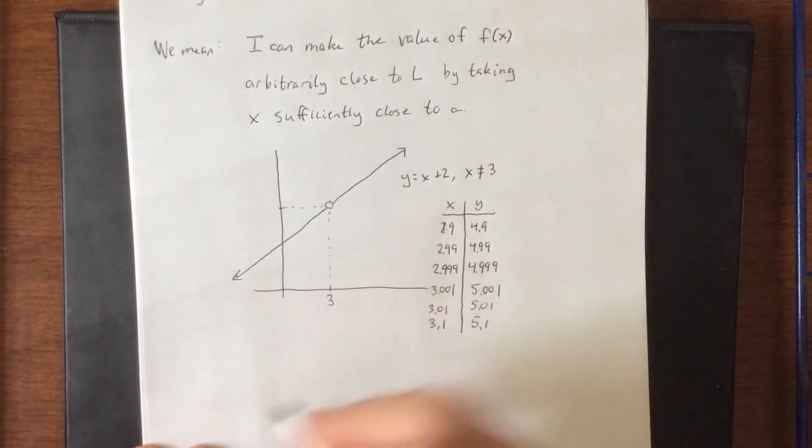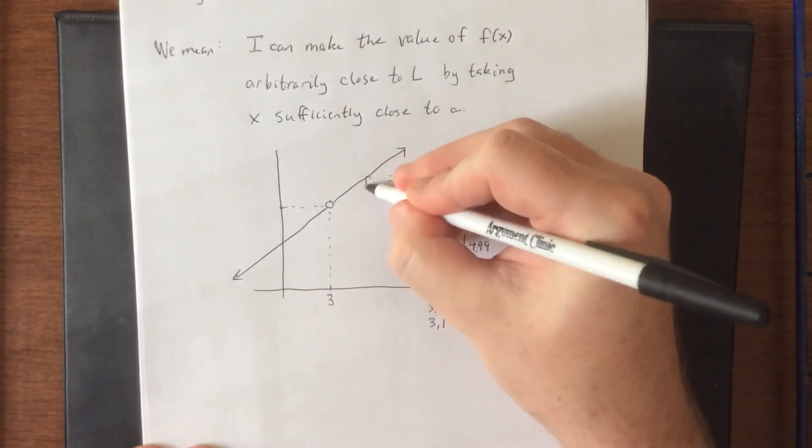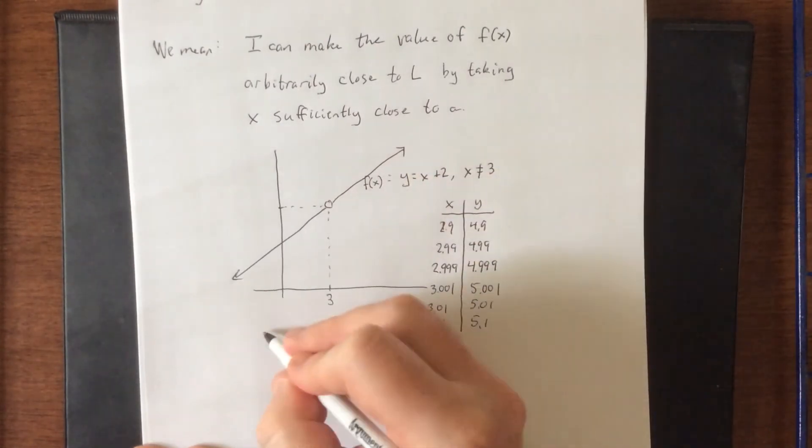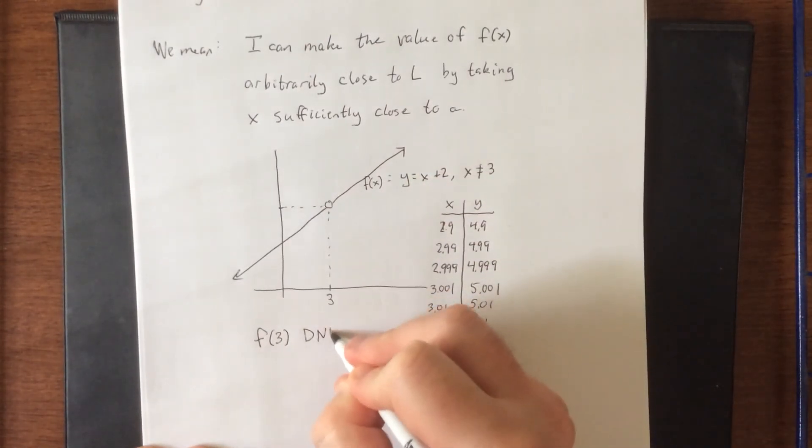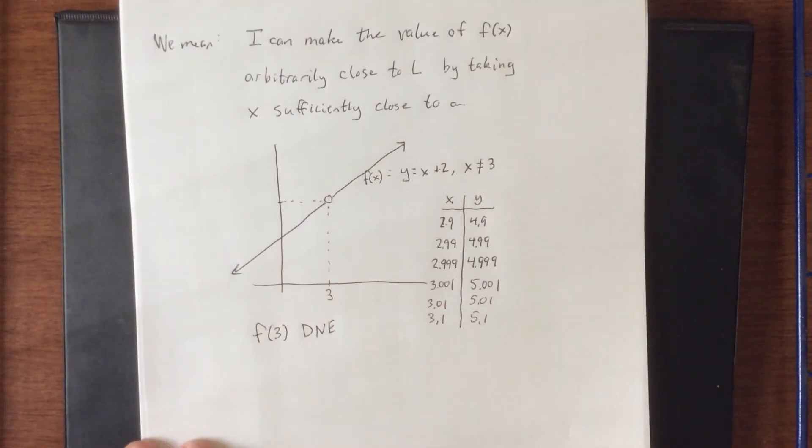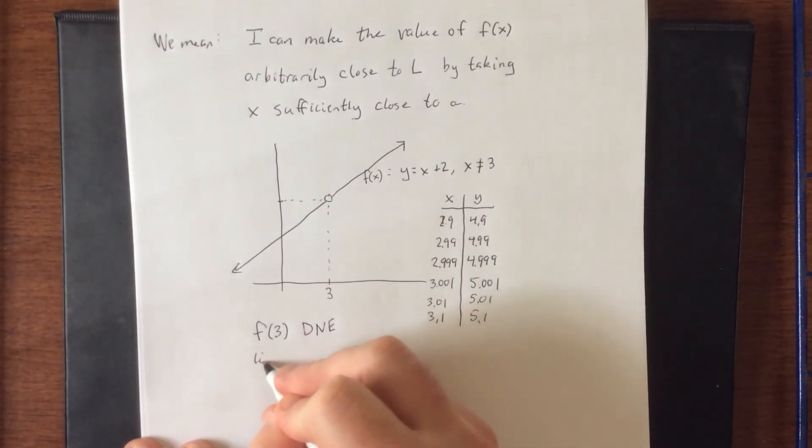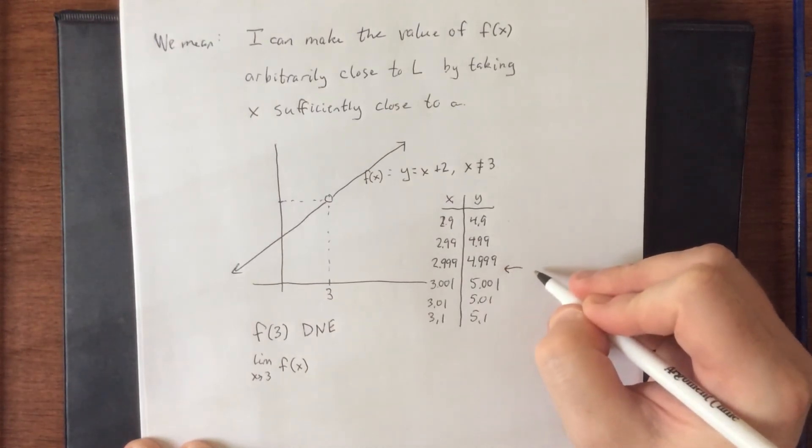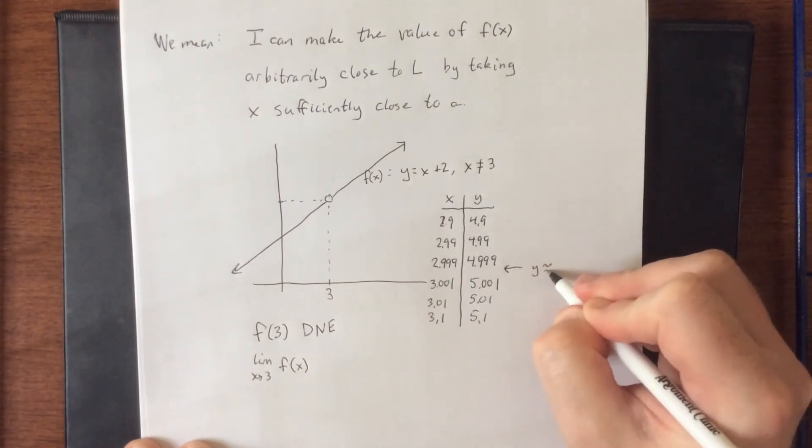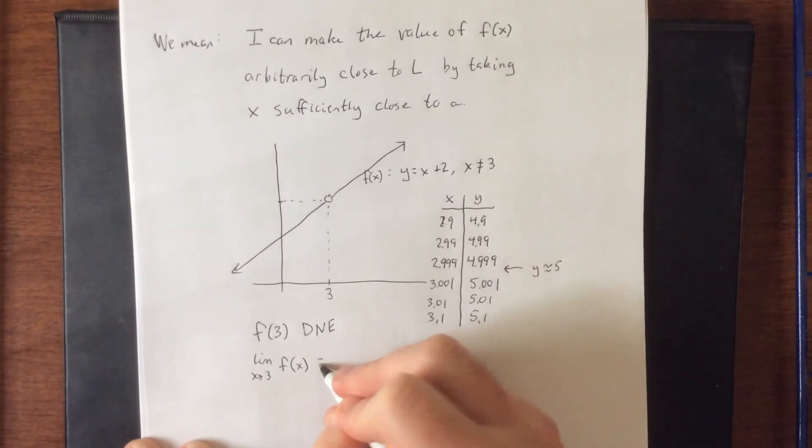So what we're saying is that if we were to rename this f of X, what we're saying is that f of 3 does not exist. We'll use DNE for a shortcut for does not exist. However, if I were to consider the limit as X approaches 3 of f of X, for that we do have a value that it looks like it's approaching. But it looks like it's approaching 5.